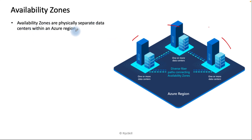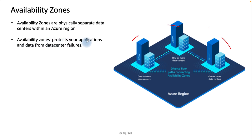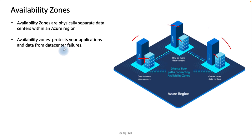Availability Zones protect your application and data from data center failure. If any data center fails, you already have Zone 2 and Zone 3 available, so you don't face any single point of failure because your application remains available.